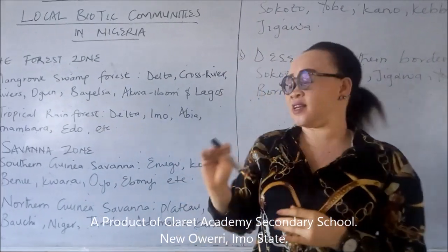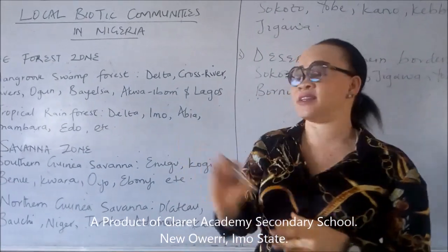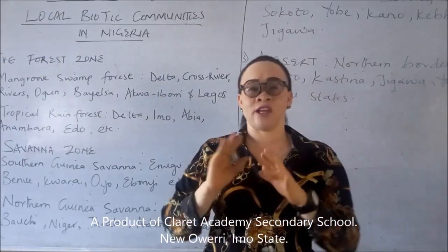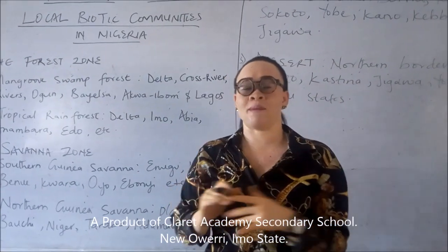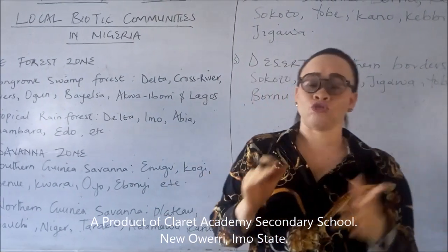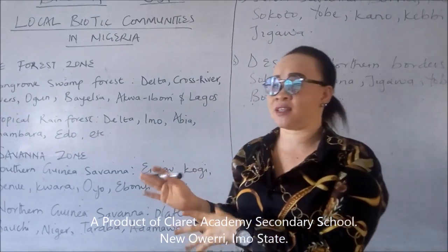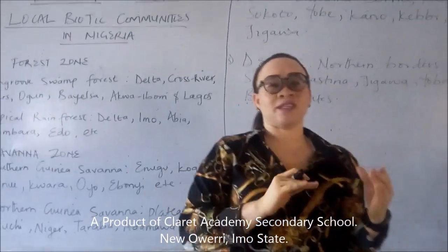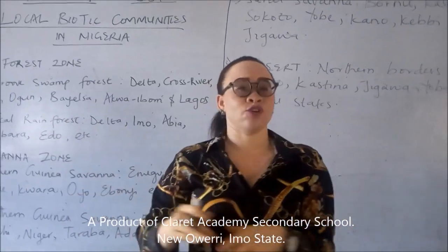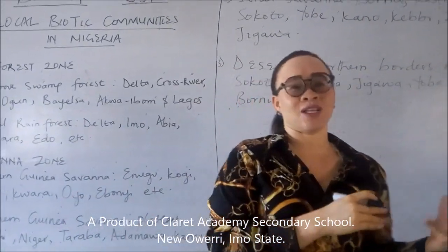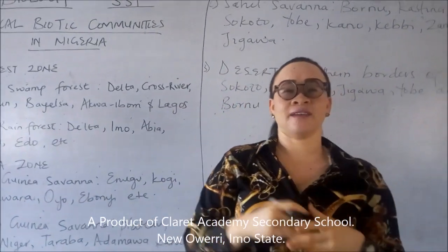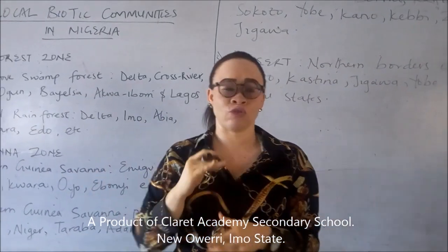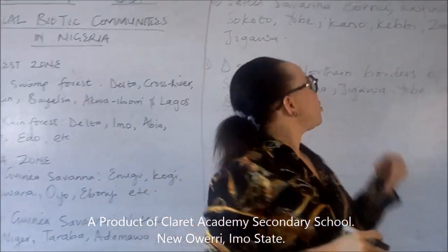Now in this northern Guinea savannah, you have a lower rainfall of about 50 to 100 cm per annum. These places have fewer grasses, fewer trees, and all the trees there are also deciduous.